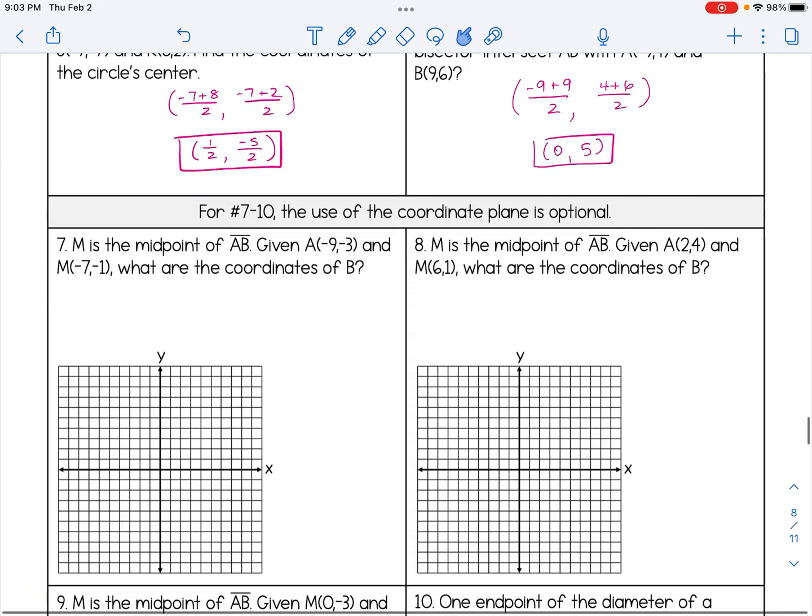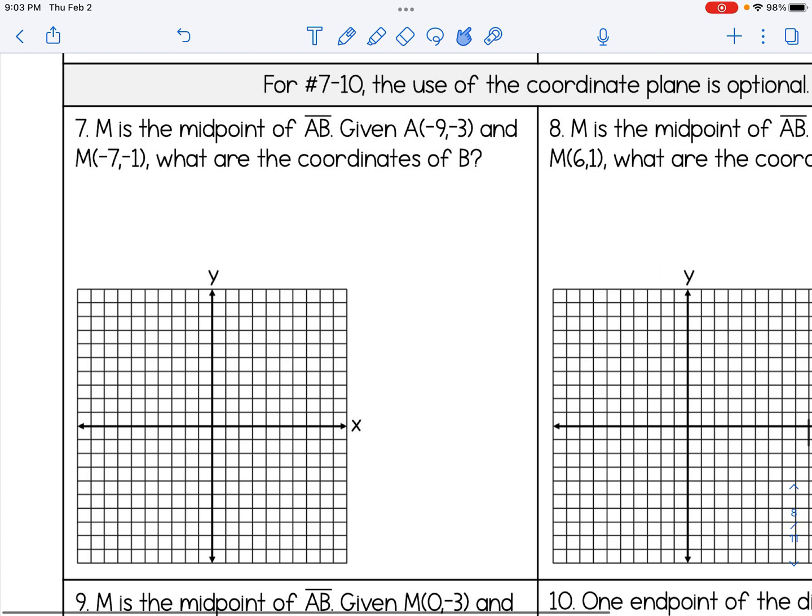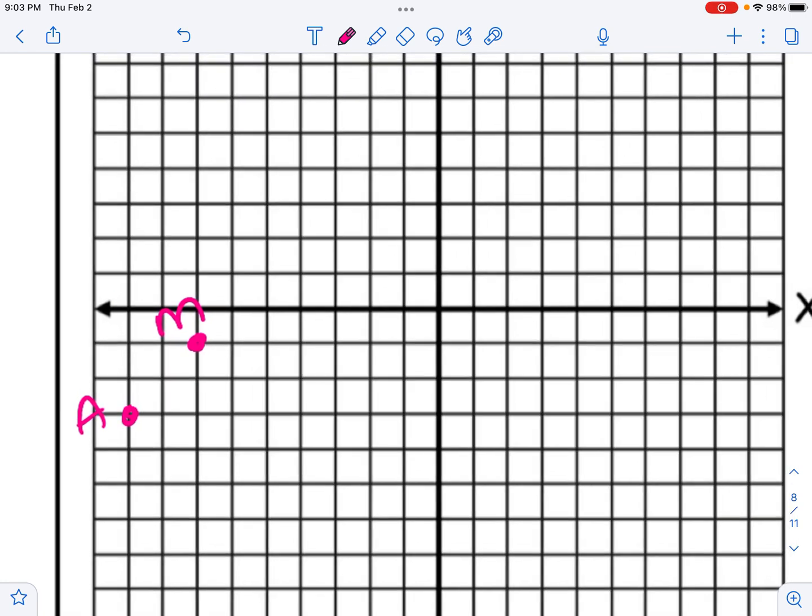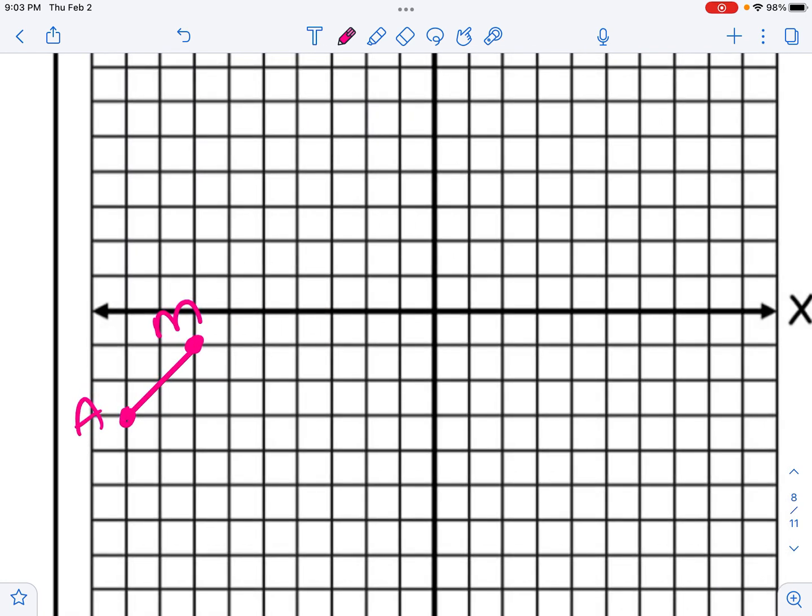So if I take a look at 7, M is the midpoint of AB, A is (-9, -3), and M is (-7, -1). So I'm going to start by plotting my two points that I know. And I'm going to zoom in on this picture. So I feel it's very important on these problems to label the points on your graph if they're given to you, because now I can see a little reminder here that M is the midpoint.